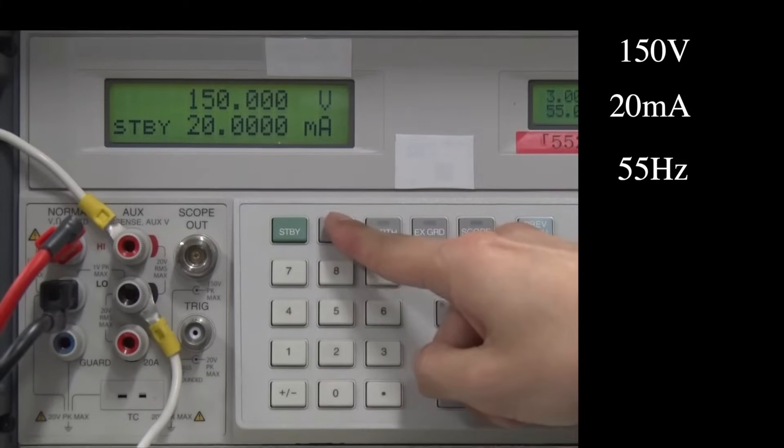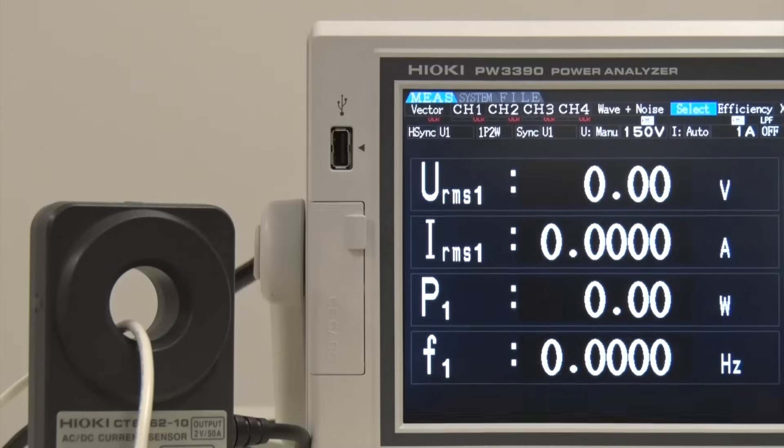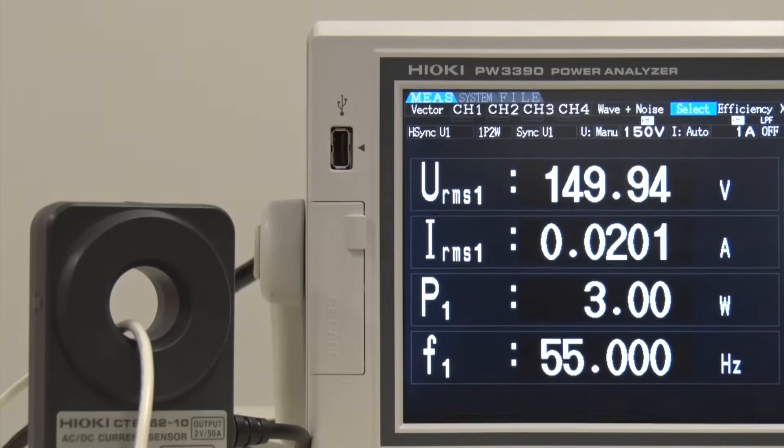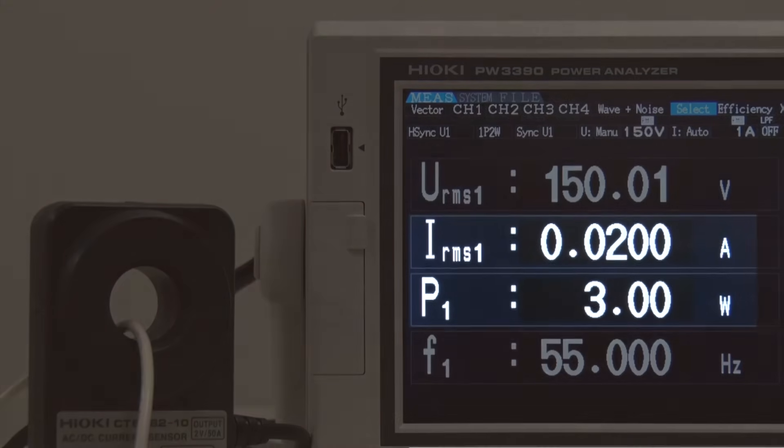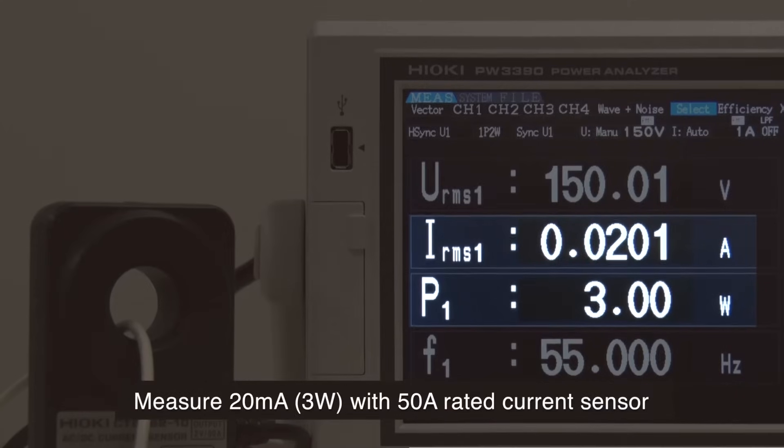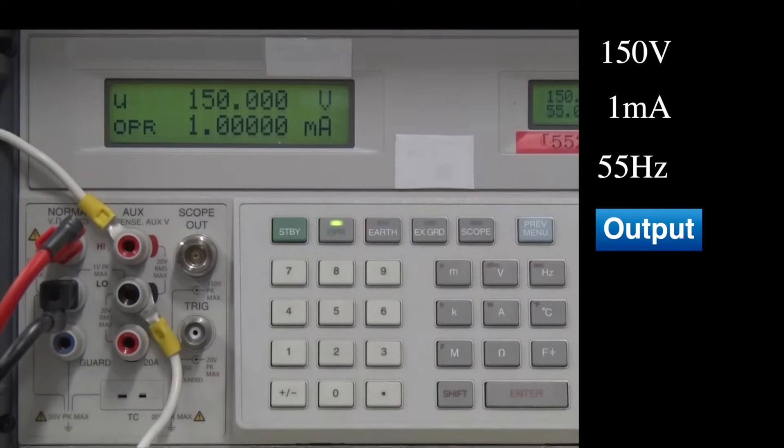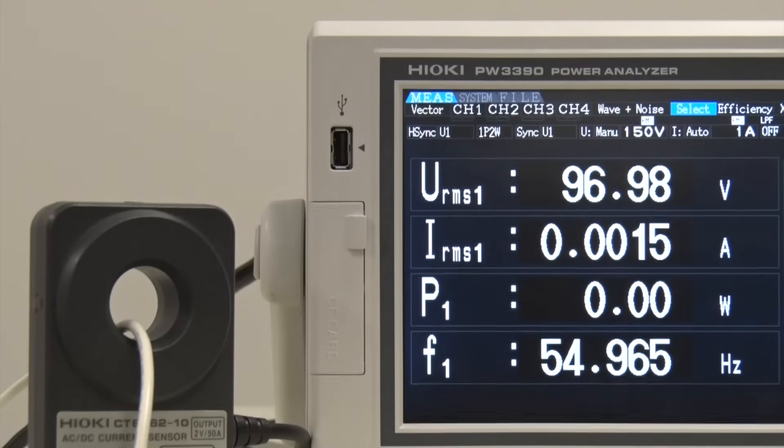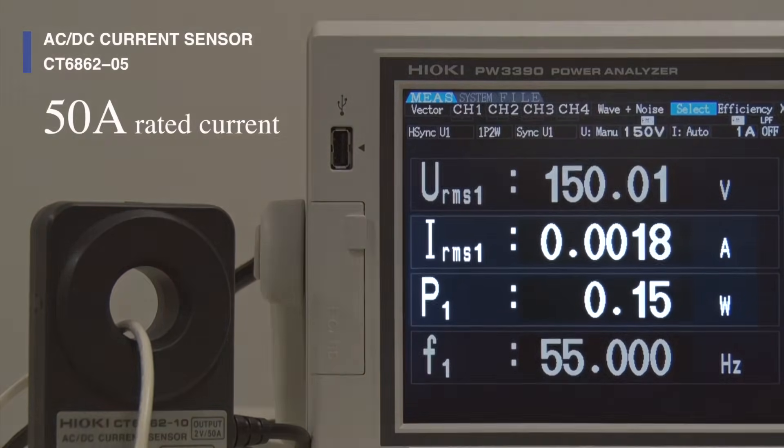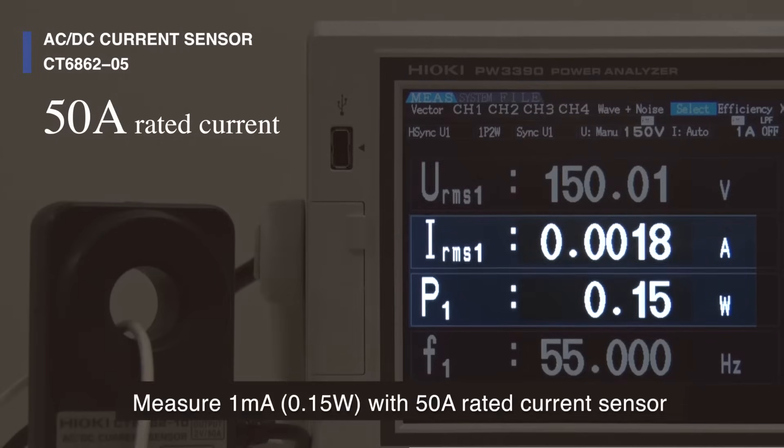Next, let's output 20 milliamps and use the same sensor to measure 20 milliamps at 3 watts. Now, let's tighten the conditions even more. Use the same sensor to measure 1 milliamp and 0.15 watts.